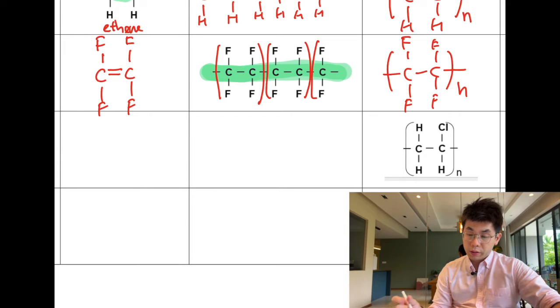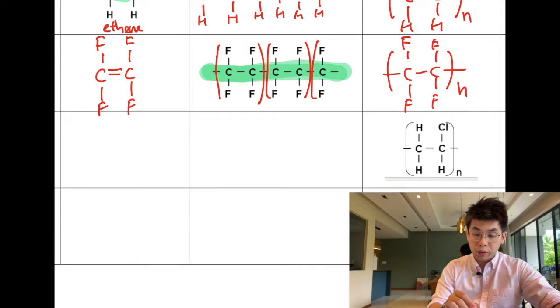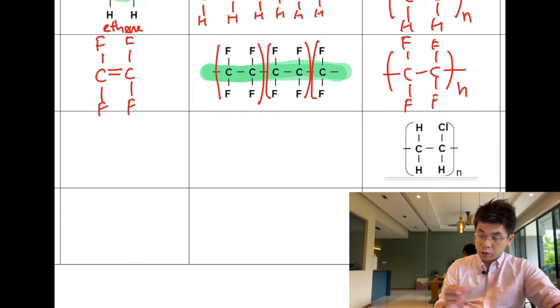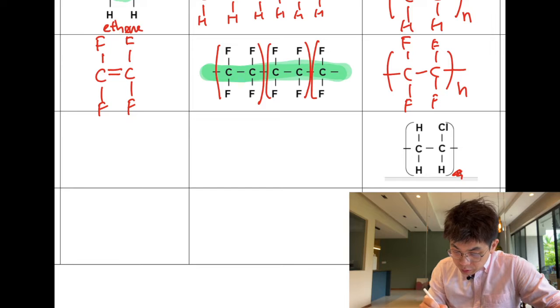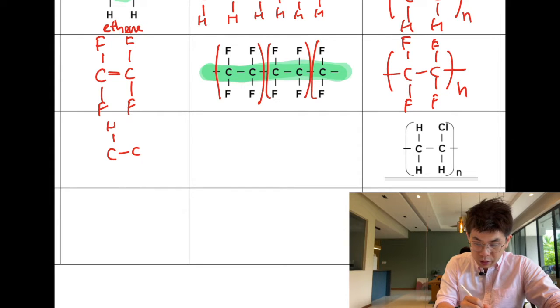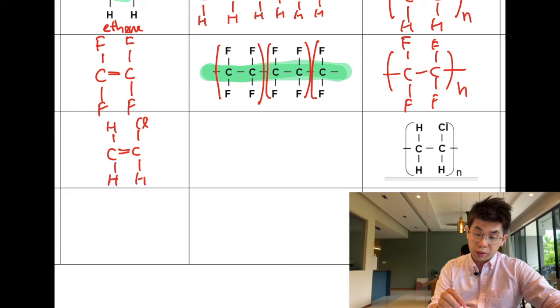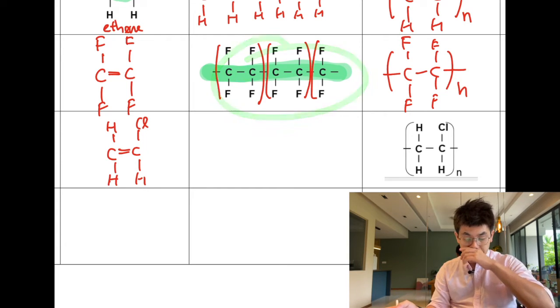If you look at the next example here, I'm given this. The monomer would look like: you cancel out the n, cancel the sides, and then just draw a double bond. After canceling all that you will get the C-C with H, Cl, H, H and then a double bond.